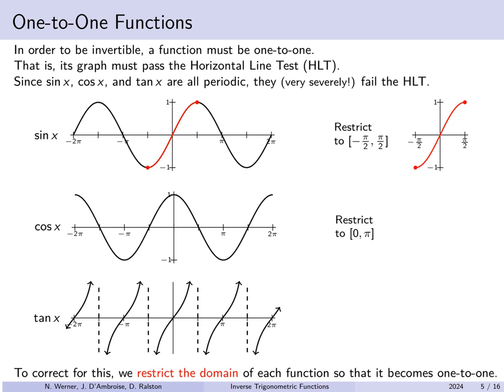For the cosine curve, we restrict from 0 to pi. This portion of the cosine curve passes the horizontal line test while still representing a full range from 1 to minus 1. For tangent, we take one full branch from minus pi over 2 to pi over 2 — the central one. All of these restrictions could have been done other ways, but this is the standard way to do it.